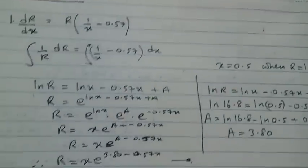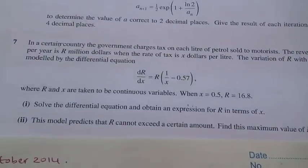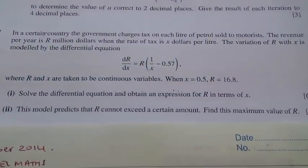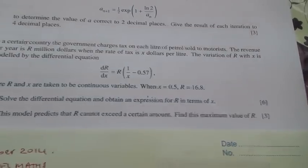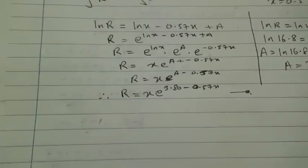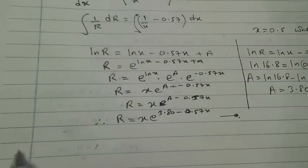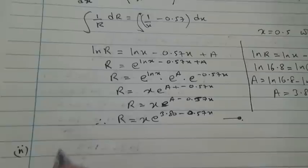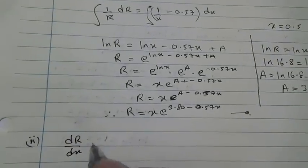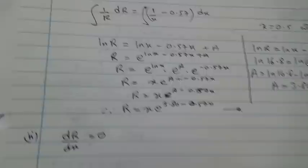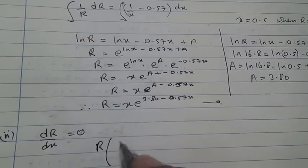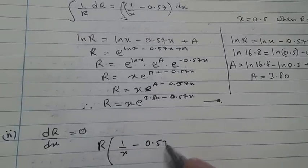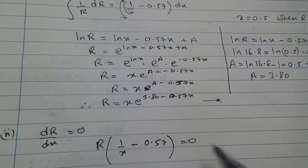For the second part, this model predicts that R cannot exceed a certain amount. Find the maximum value of R. To find the maximum value of R, you're going to set dR/dx equal to 0. What is dR/dx? It is R times 1 over X minus 0.57. You set that to 0.